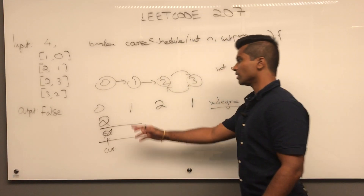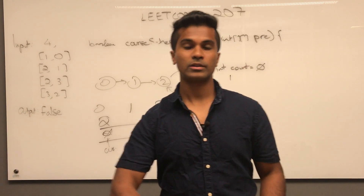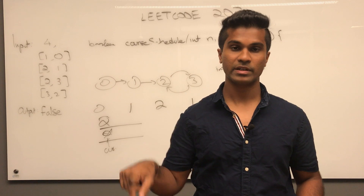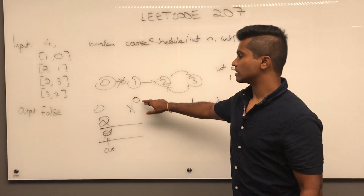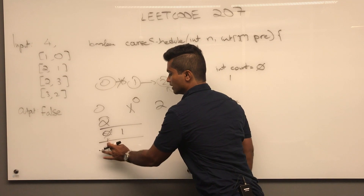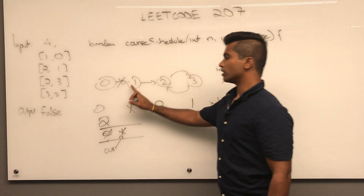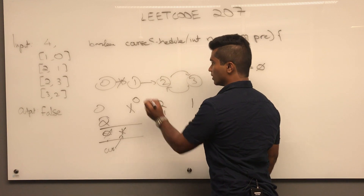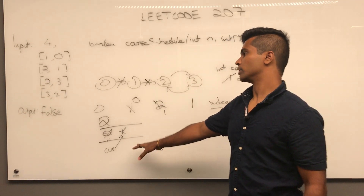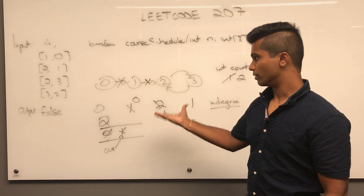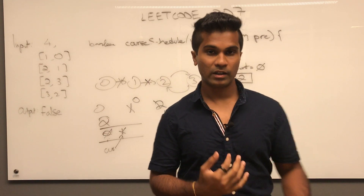We pop it out, its in-degree is zero, so we increment count by one. Every time we pop a node, we decrement its neighbors' in-degrees — like breaking that connection. That neighbor's in-degree goes to zero so we put it in the queue. We pop one, increment count to two, decrement its neighbor, but two still has in-degree one so it can't enter the queue. Count stops at two, which doesn't equal the total number of nodes, so we return false.